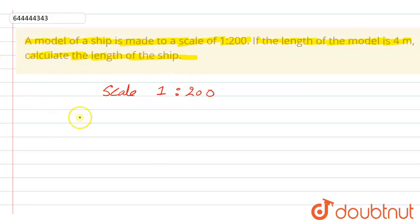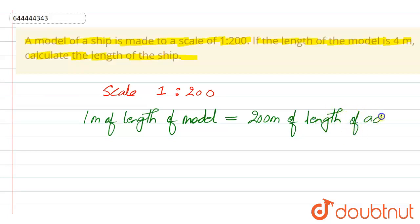That means that 1 meter length of model would be equal to 200 meter of length of actual ship.